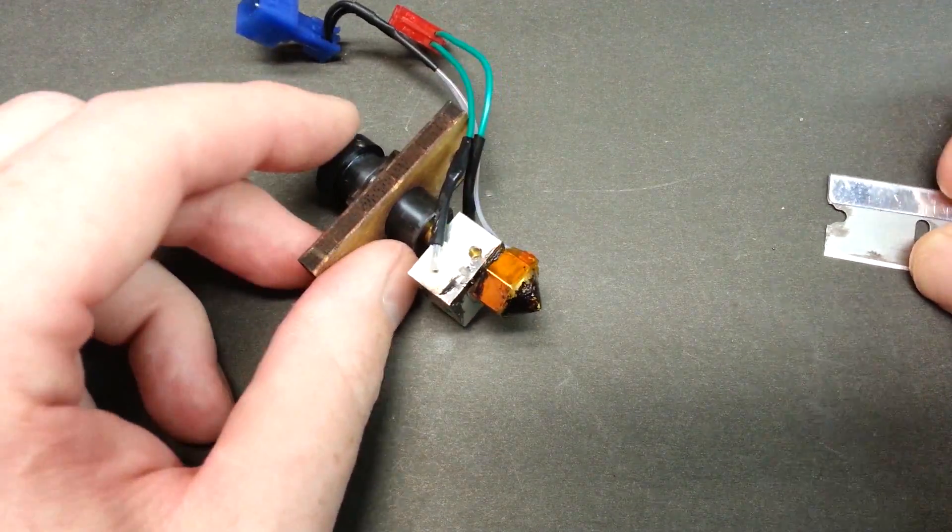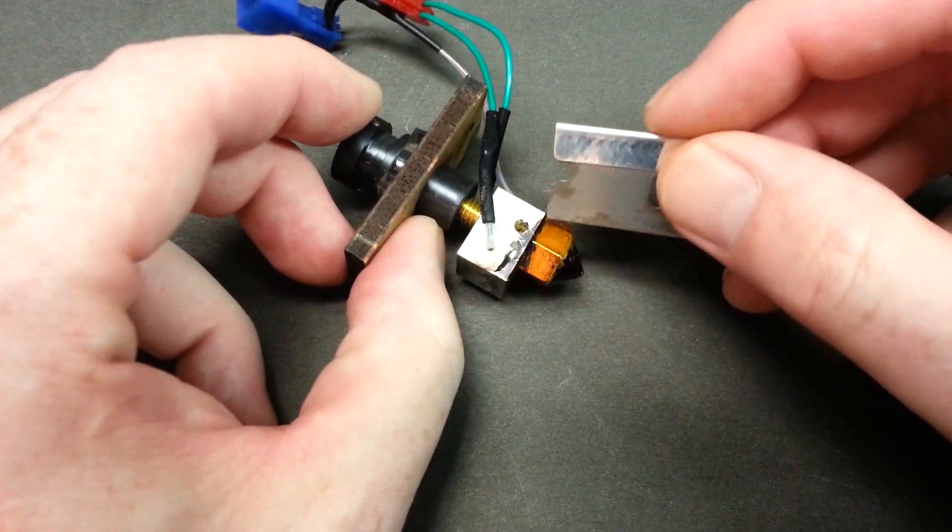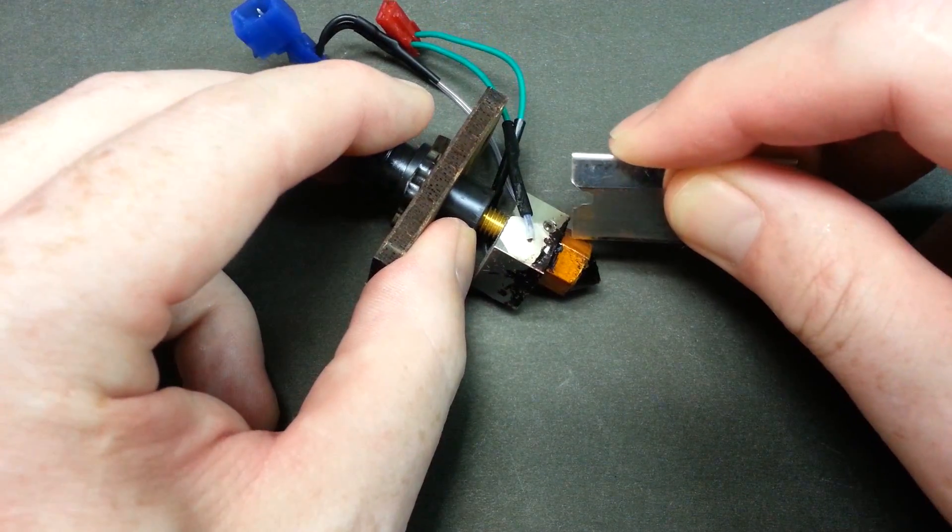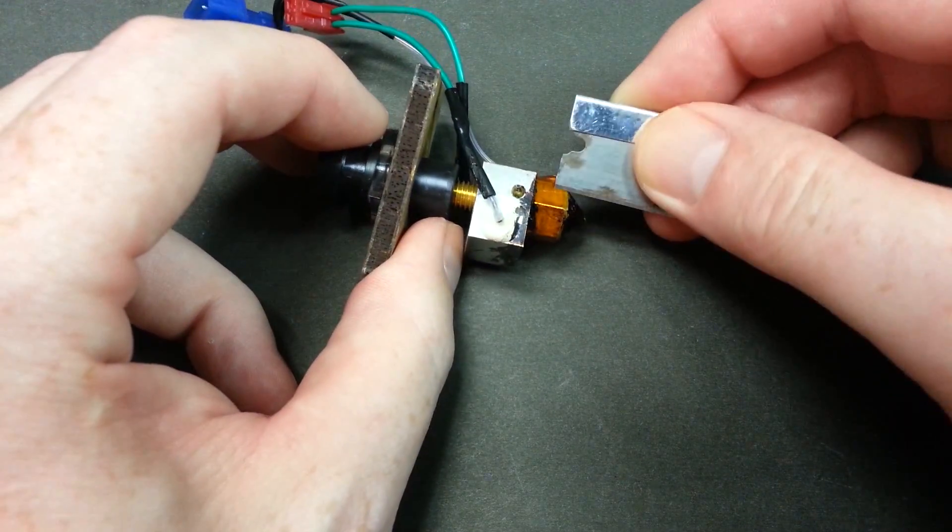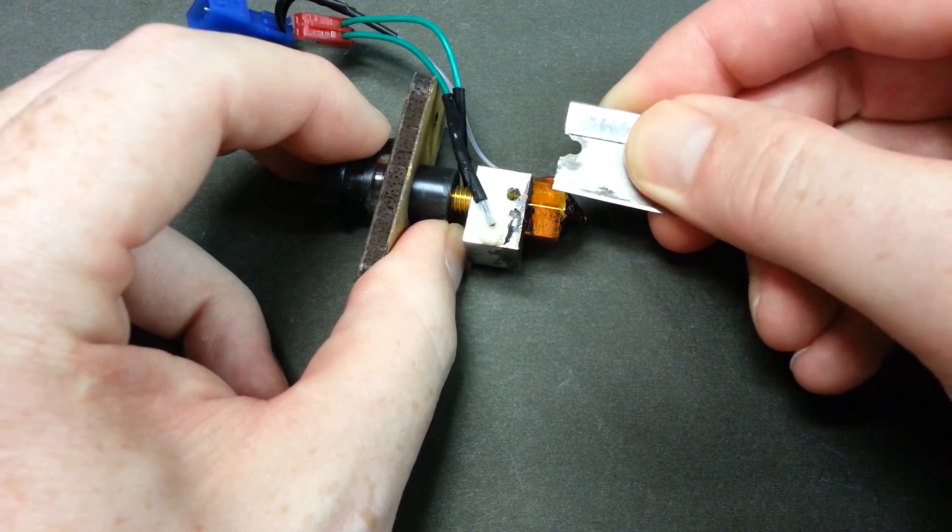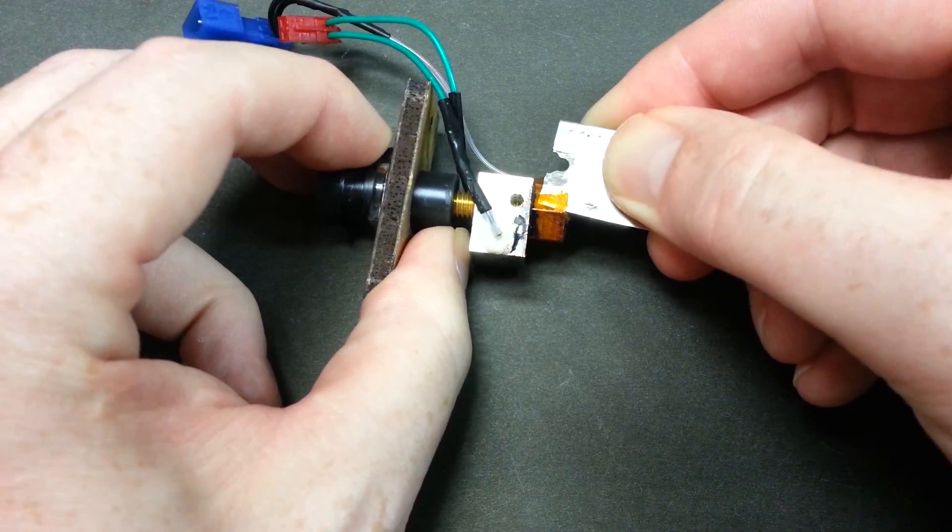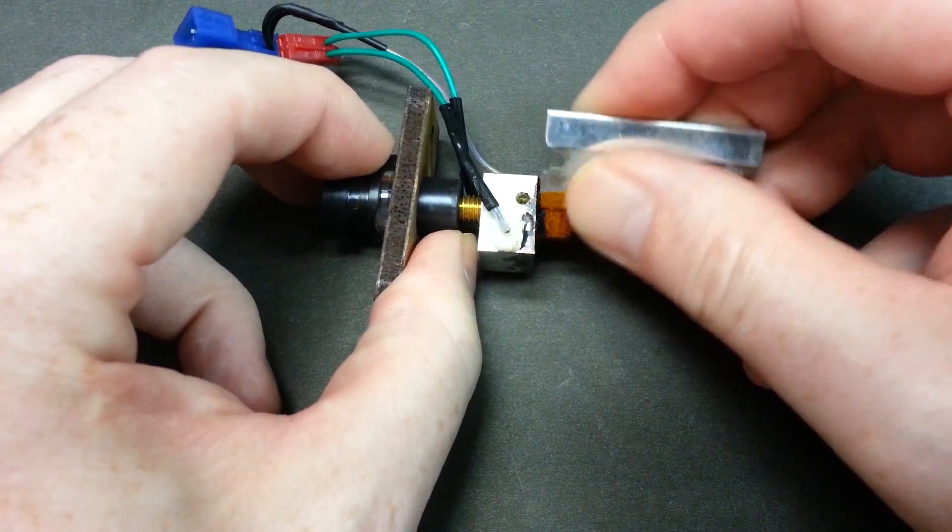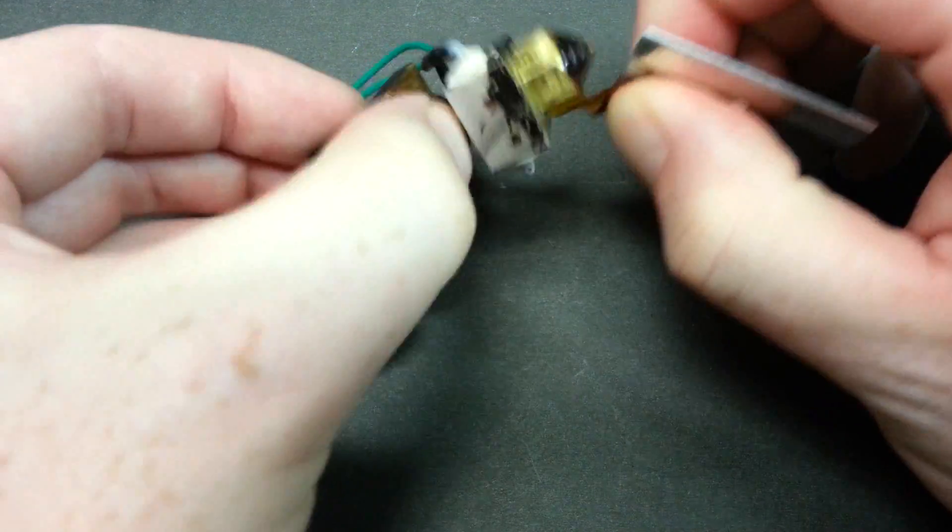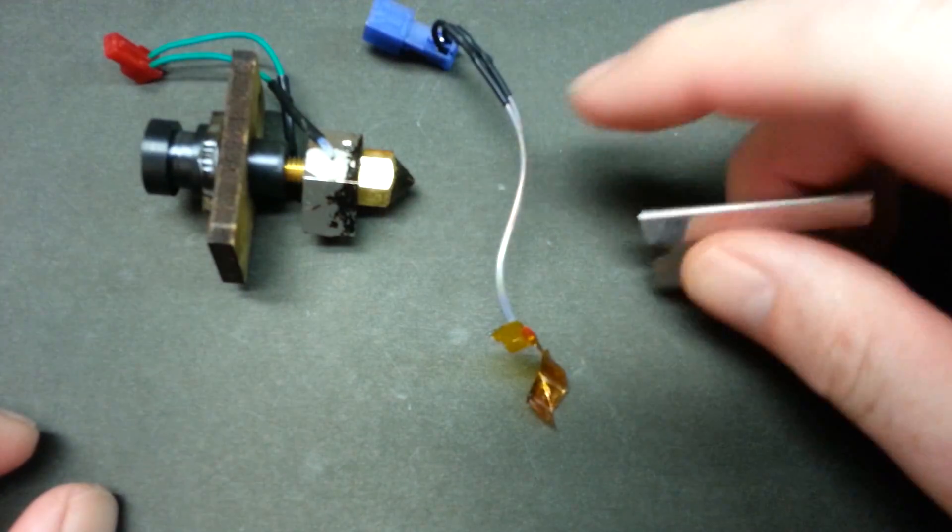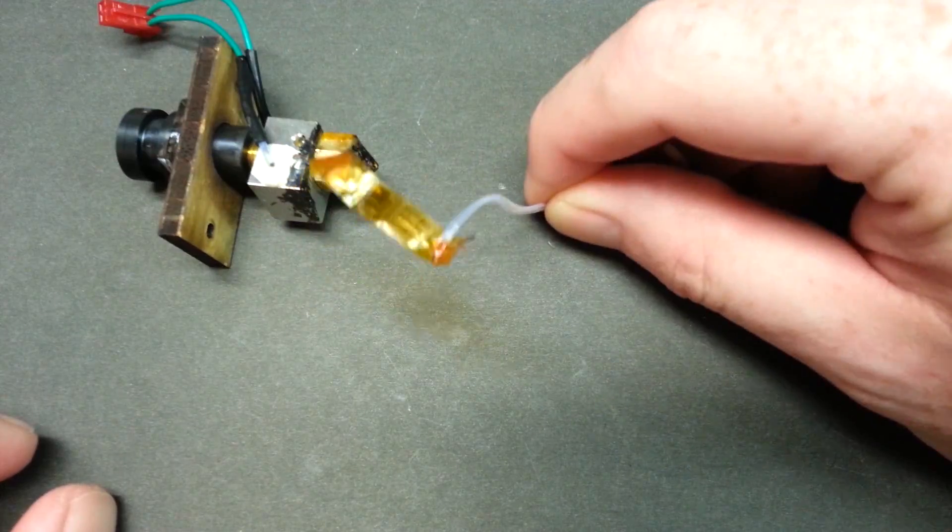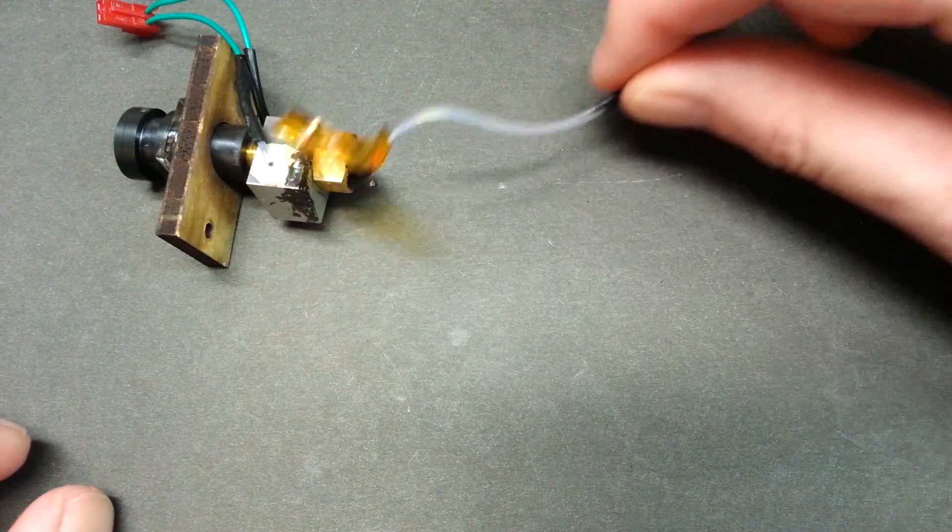So to get started, the first thing we're going to do is get this Kapton tape off of here. We need to get that thermistor off so we can get the nozzle apart. Just that simple guys. Thermistor comes off, we set that aside, we're going to need that again.